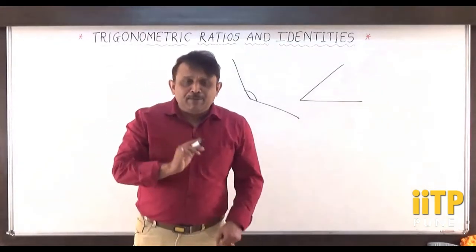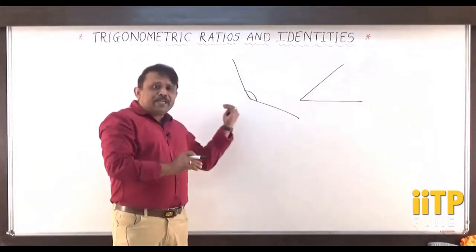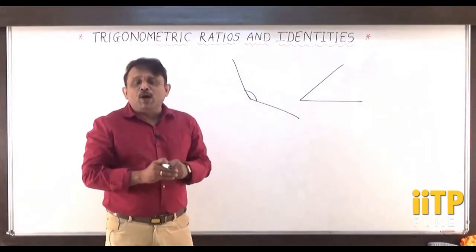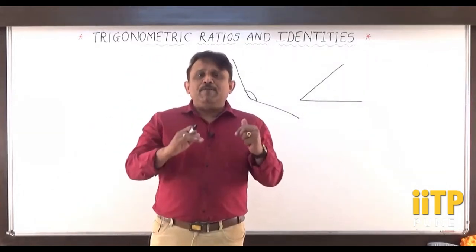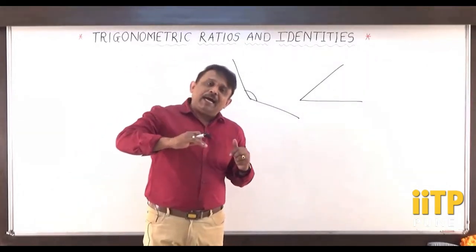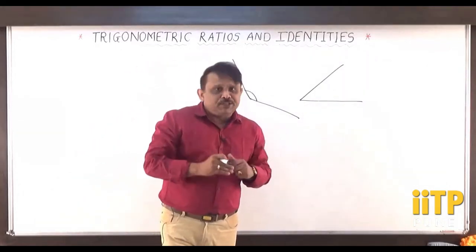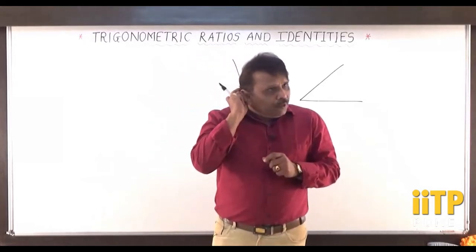The opposite angle may be called a reflected angle, so we can have angles of at most 360 degrees.